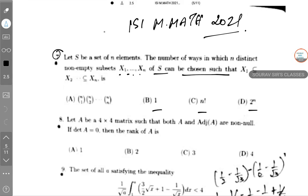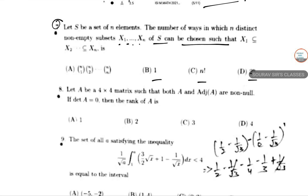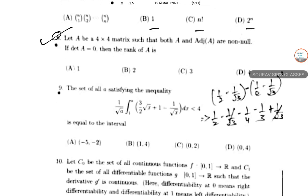This is ISIM MAT 2021, and in this video I will be solving question number 8. The previous video we solved 7. So A is a 4 cross 4 matrix such that both A and adjoint of A are non-null matrices. If determinant of A equals 0, then find the rank of A.